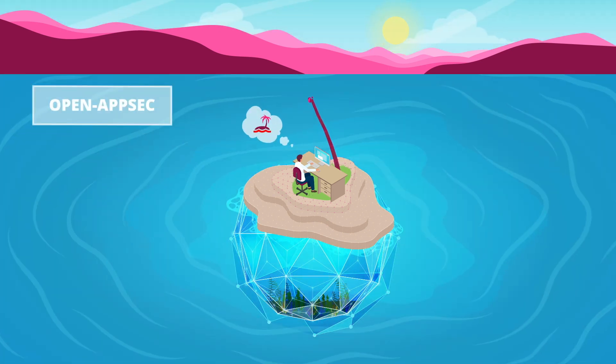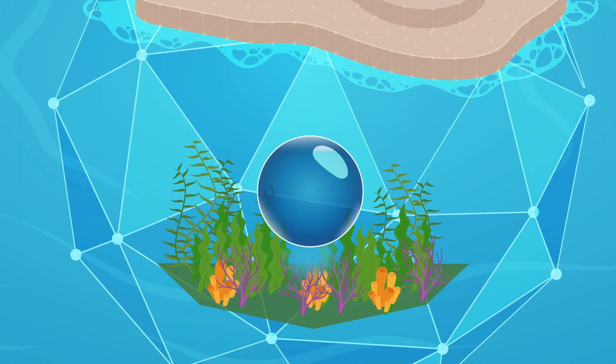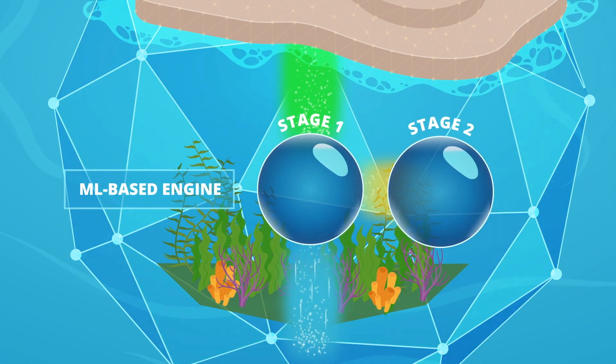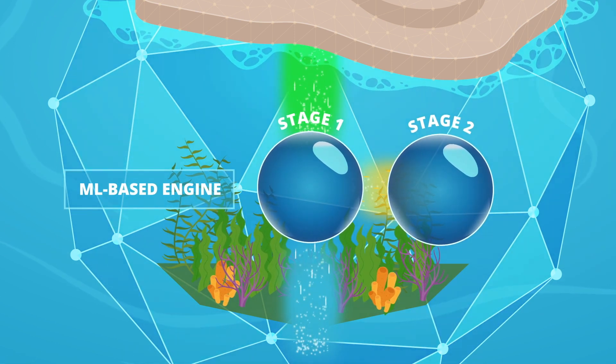Open AppSec's automatic web application and API security uses an innovative two-stage machine learning base engine to prevent zero-day attacks without signatures.